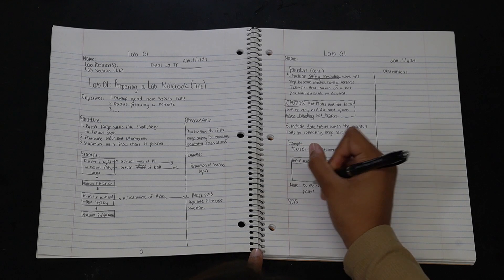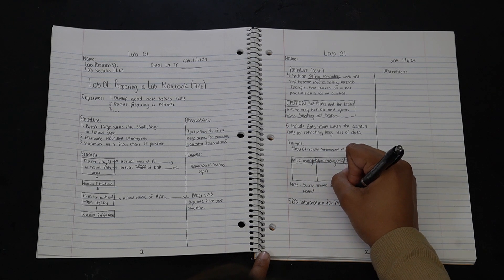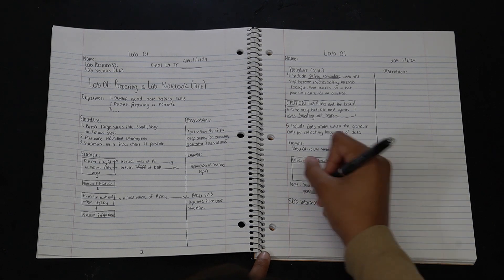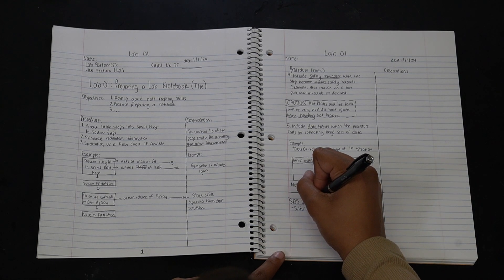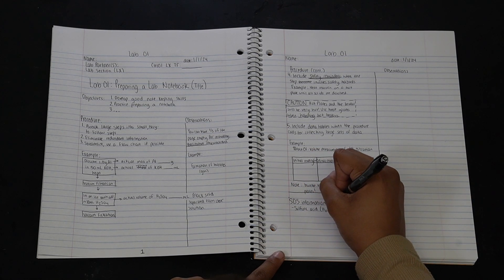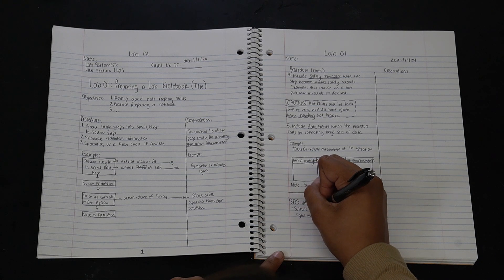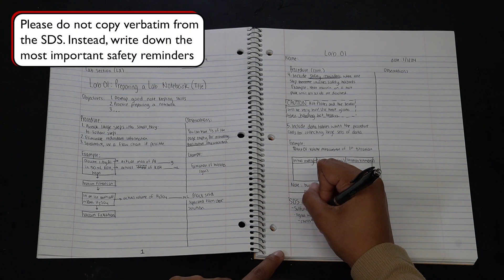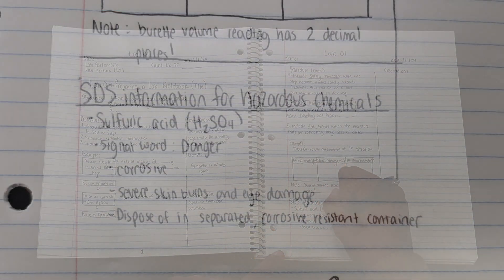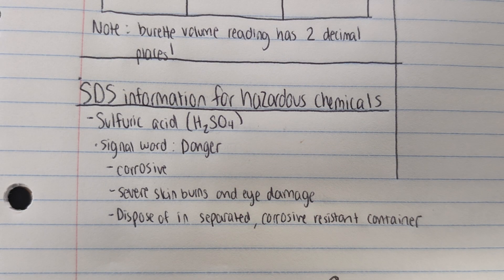In your notebook, it is essential to record at least the hazard identification to understand the risks associated with the chemical. You should also note any special handling methods or procedures for treating chemical exposure. However, there is no need to copy everything from the safety data sheet — that would be a waste of time. Instead, take a few moments to write down the most important safety reminders during lab preparation. This ensures everyone is aware of the hazards and can work safely together.